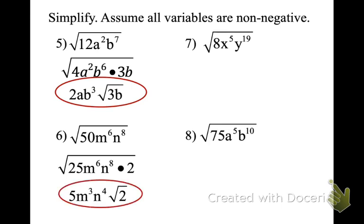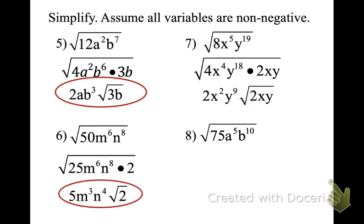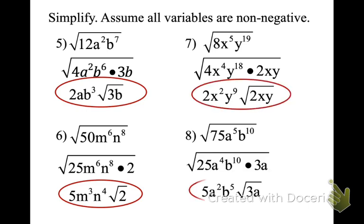Let's check our work. You should have had 5m³n⁴√2. The next one is 2x²y⁹√(2xy). The next one should have been 5a²b⁵√(3a).